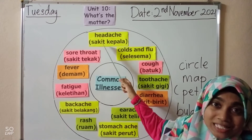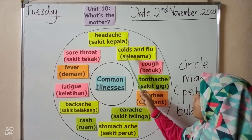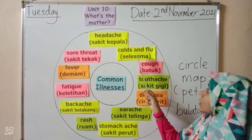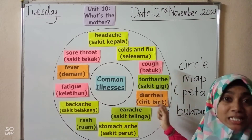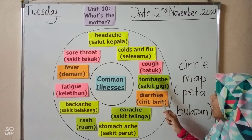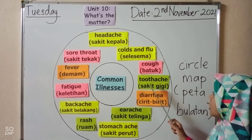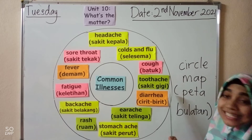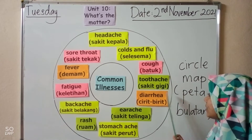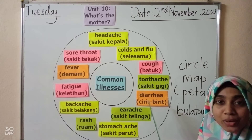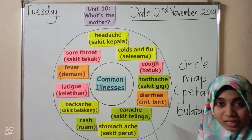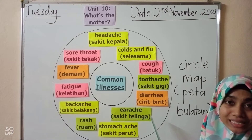First one: headache — sakit kepala. Second: cold and flu — selesema. Cough — batuk. Toothache — sakit gigi. Diarrhea — cirit-birit. Earache — sakit telinga.